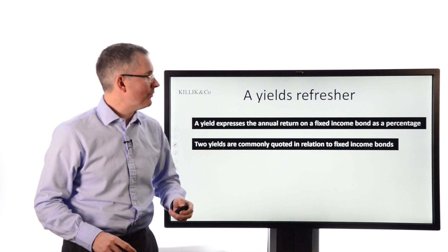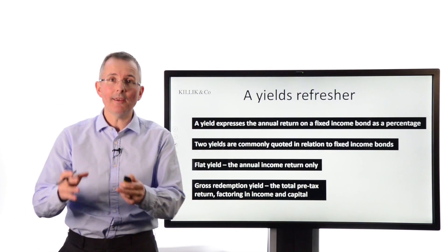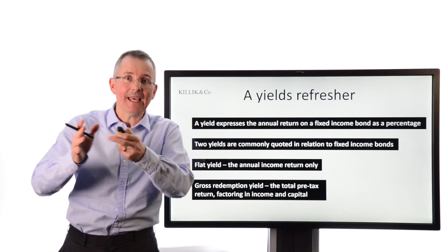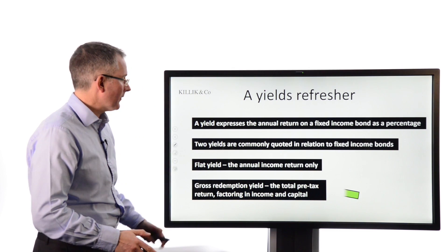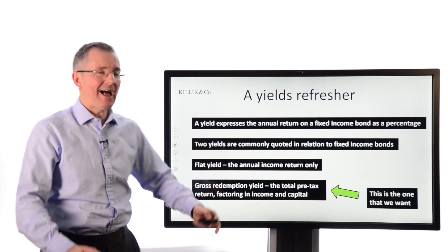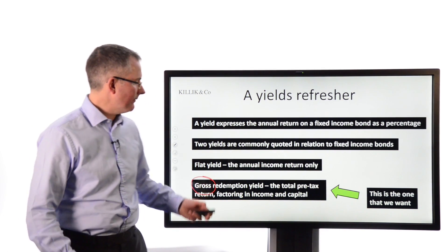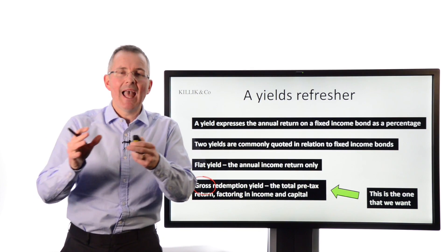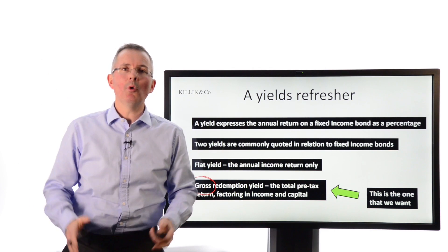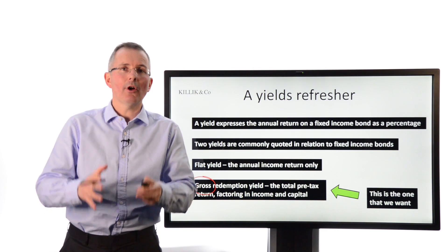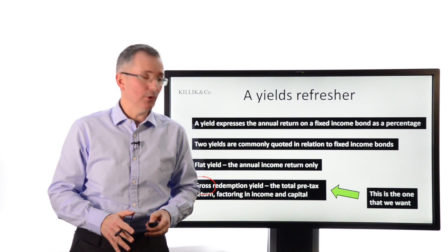Two yields are commonly quoted in relation to fixed income bonds. The first is the flat yield — the income yield — which just gives you the annual income return on the bond. The one we want is the gross redemption yield: the total pre-tax return factoring in both income and capital gains. Yield spreads are all about looking at the total yield available on different bonds of similar maturity but different risk profiles.